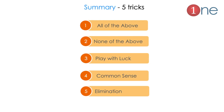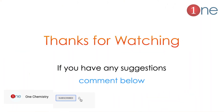Summary of the five tricks: Trick one — 'All of the above' is rarely the answer. Trick two — 'None of the above' is also rarely the answer. Trick three — play with your luck using calculated risk. Trick four — use your common sense, which is your stored knowledge. Trick five — use the elimination technique to predict the answer. I hope these five tricks help you answer MCQs very effectively. Thanks for watching — if you have any suggestions, comment below.